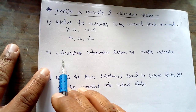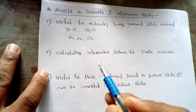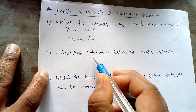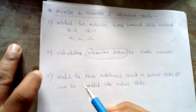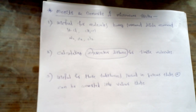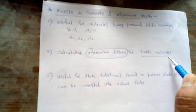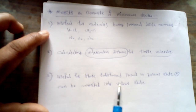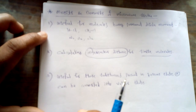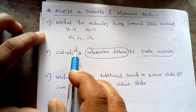The second important merit of this spectroscopy is that it is useful for calculating the internuclear distance. We may calculate the internuclear distance for simple molecules only using this microwave technique. On the other hand, if the molecule is a complicated one, we cannot calculate its internuclear distance using microwave spectroscopy.